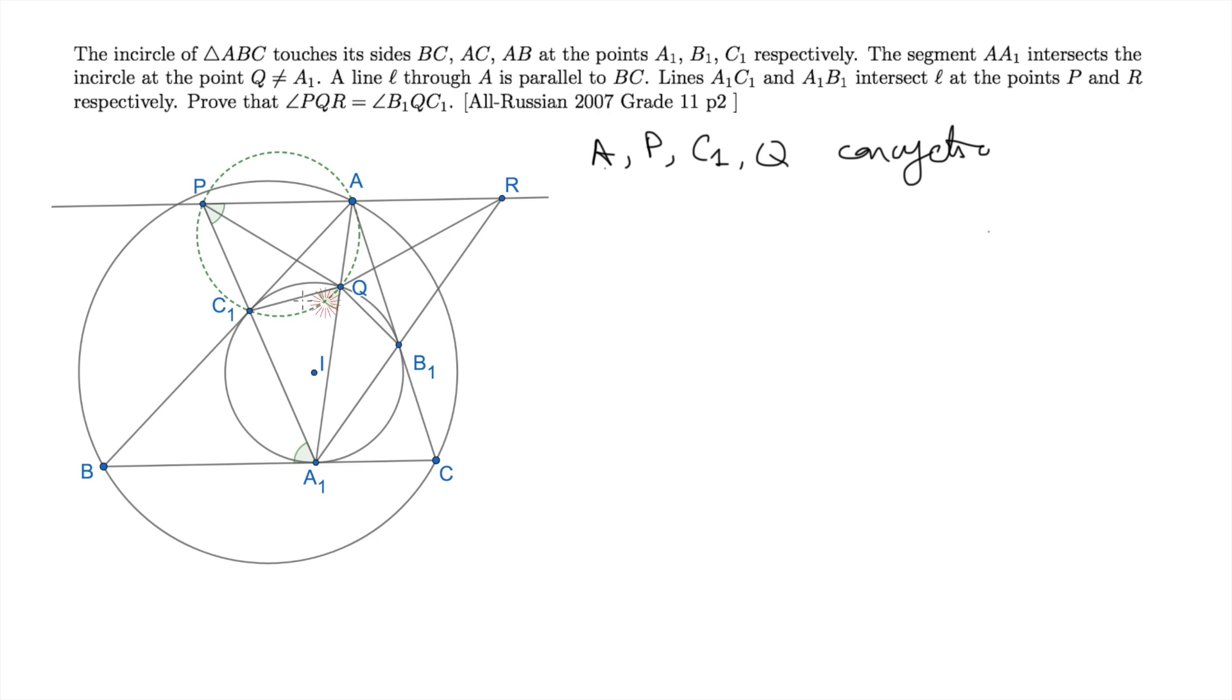Indeed, the incircle is tangent to the side BC. So by tangent chord theorem, the angle C1QA1 equals to the angle C1A1B. Now since AP is parallel to BC, this angle C1A1B also equals to the angle C1PA. Therefore, the opposite angles of the quadrilateral A, P, C1 and Q are supplementary, which means that they are concyclic.